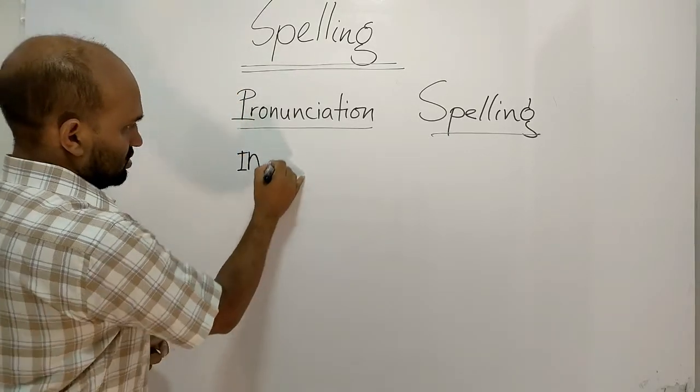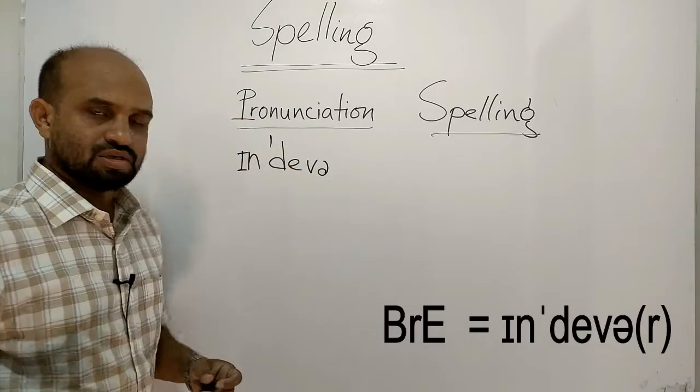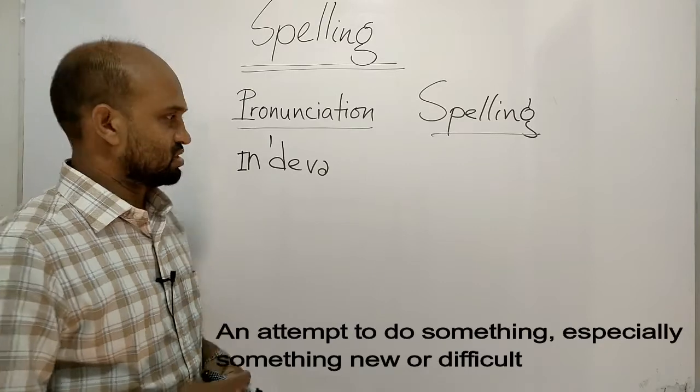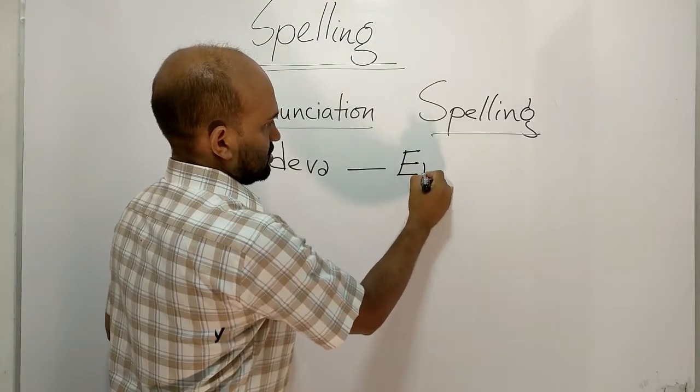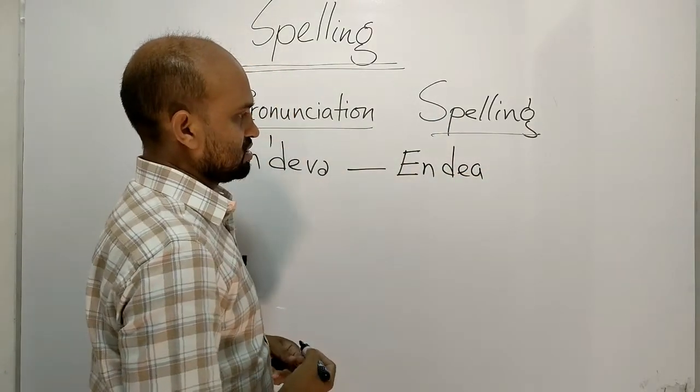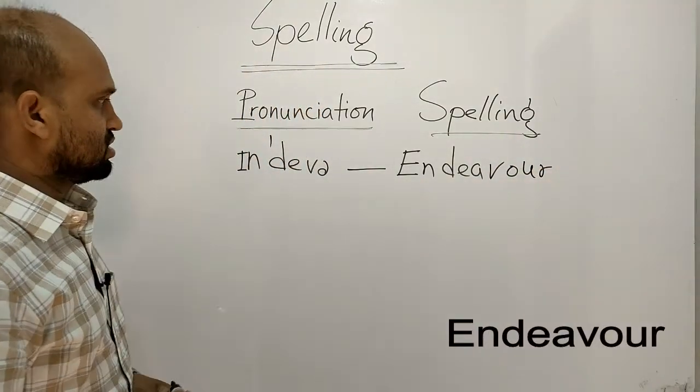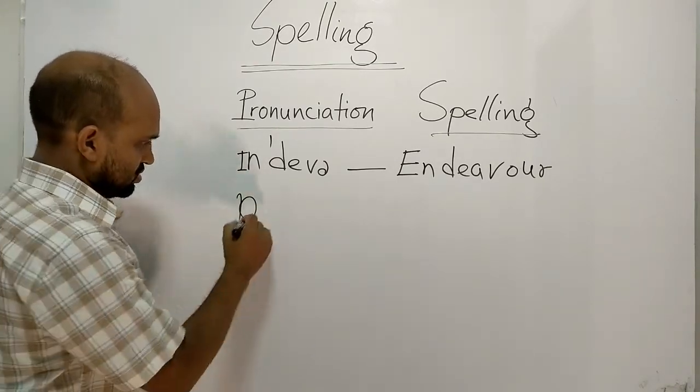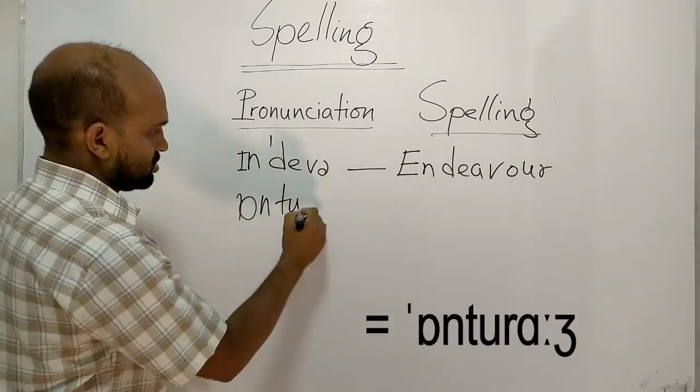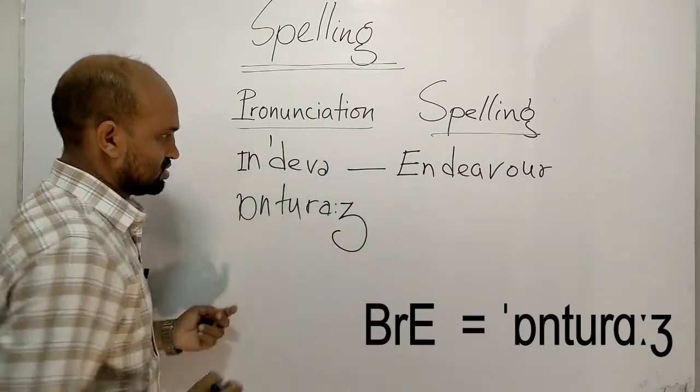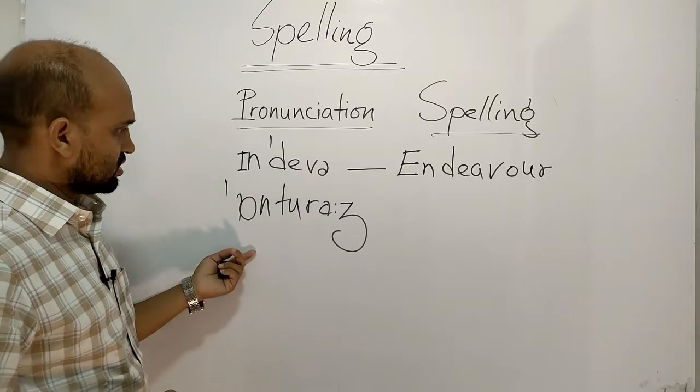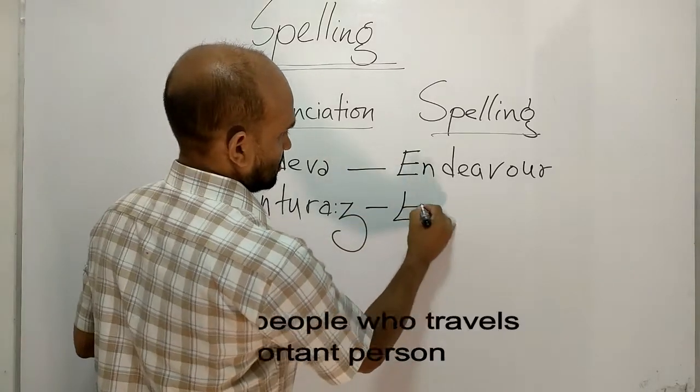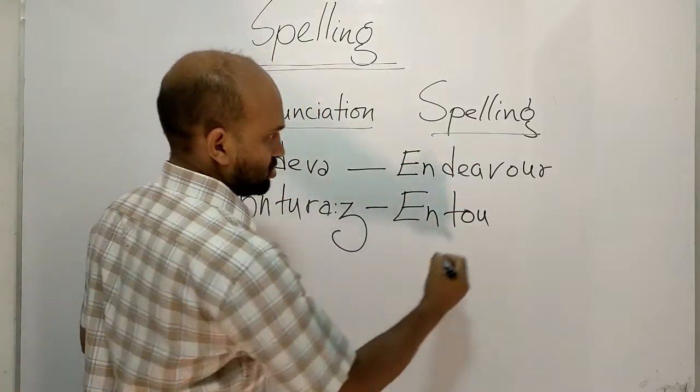Next word is entourage. The meaning is a group of people who travels with an important person. The spelling is E-N-T-O-U-R-A-G-E, entourage.